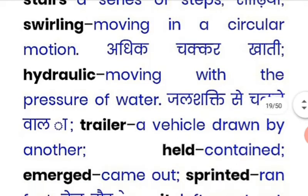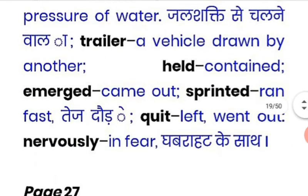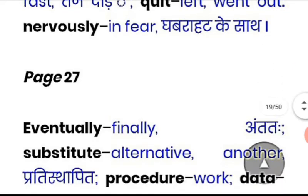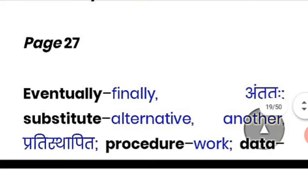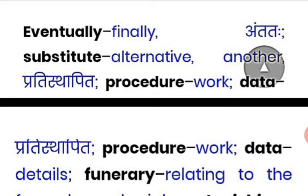'Trailer' is a vehicle drawn by another — a trolley pulled by something else. 'Ambushed' means to come out suddenly. 'Sprinting' means running very fast. 'Quit' means to leave or abandon something. 'Nervously' means in fear. 'Eventually' means finally. 'Substitute' means alternative.